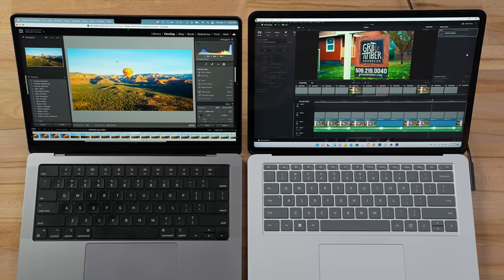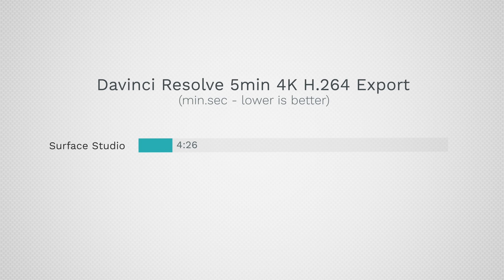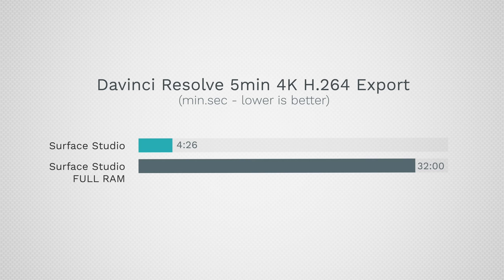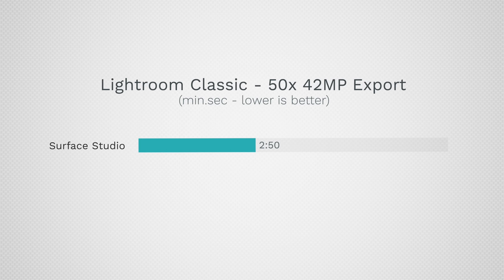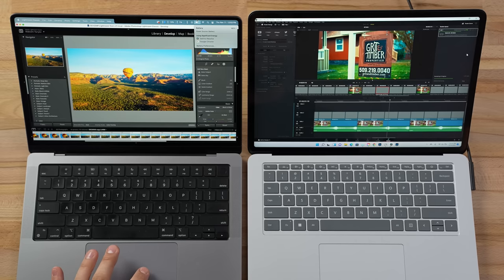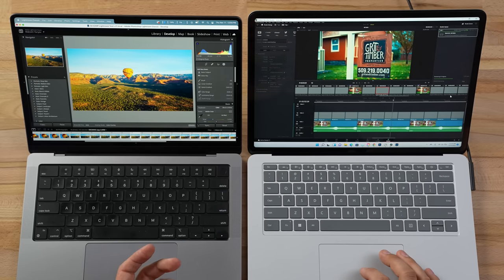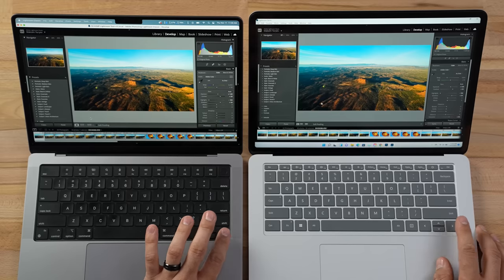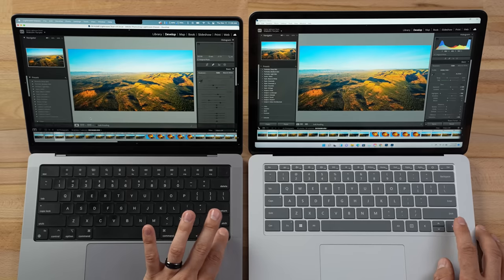On the Windows side, instead of 4 minutes 26 seconds, the video export took about 32 minutes — still not done — and the Lightroom export instead of 2 minutes 50 seconds took 5 minutes 23 seconds, almost twice as long. Battery life also showed a crazy difference: the Mac was at 70% while the Windows machine was at 20% and had to be plugged in.